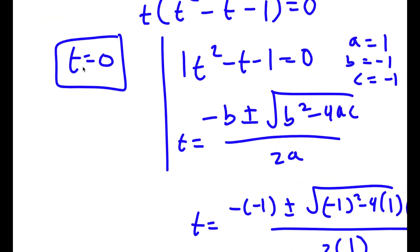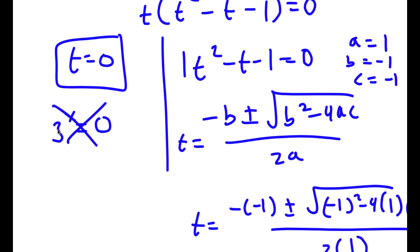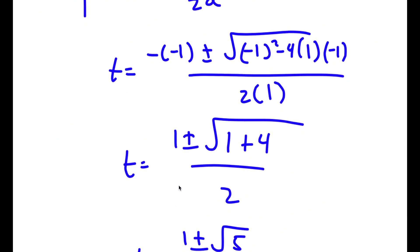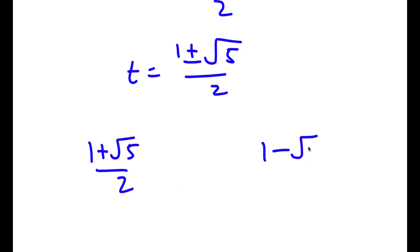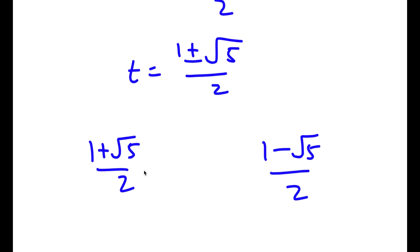Recall that t equals 3 to the power of x. Starting with t equals 0: if 3 to the power of x equals 0, this is impossible because no power of a positive base can equal zero. So t equals 0 gives no solution for x.